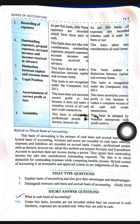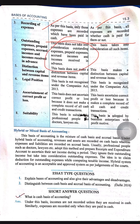Regarding recording of expenses: in cash basis, only those expenses are recorded which have been paid in cash. In accrual basis, all types of expenses are recorded, including outstanding, prepaid, and accrued expenses. There is no treatment of outstanding or prepaid items in cash basis, but in accrual basis every such transaction is treated.